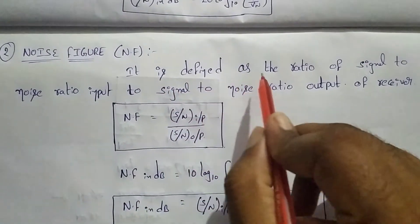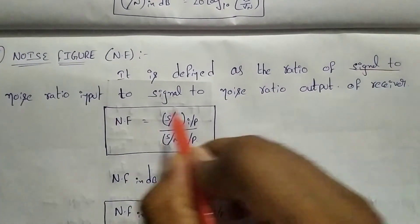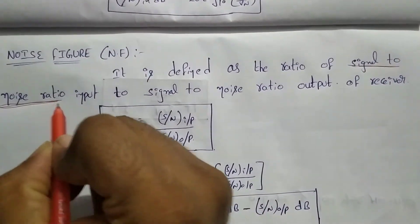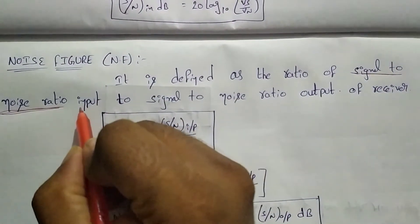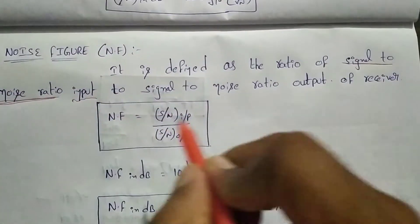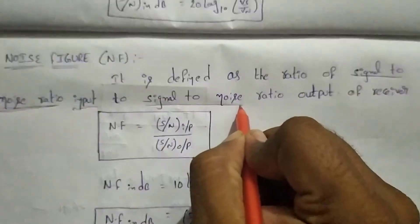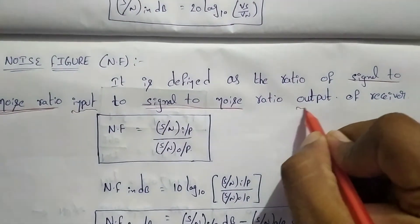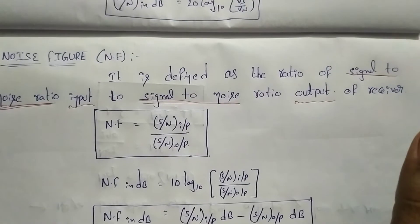It is defined as the ratio of signal-to-noise ratio at input to signal-to-noise ratio at output of the receiver.